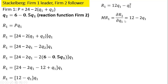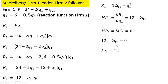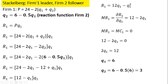We get marginal revenue by taking the derivative of firm 1's revenue function with respect to Q₁. Setting marginal revenue equal to marginal cost — again, MC equals zero — gives 12 minus 2Q₁ = 0. Solving for Q₁, firm 1 will produce 6 units. Plugging 6 into firm 2's reaction function, firm 2 produces 3 units. A standard feature of Stackelberg is that when both firms have the same cost structure, the leader produces twice as much output as the follower.